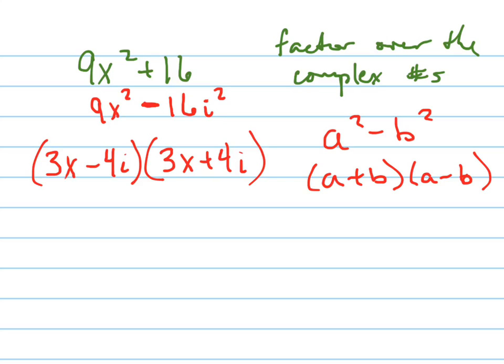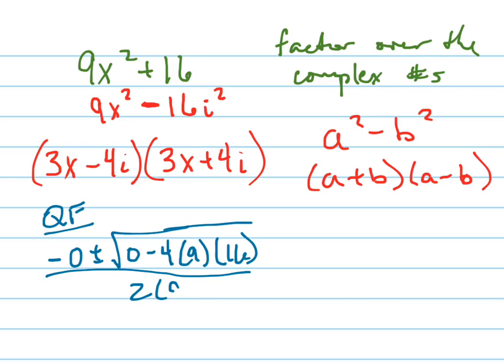I'll do that in blue just to show you it's the same answer. The quadratic formula would be negative b, which is 0, plus or minus the square root of b squared, which is 0, minus 4ac all over 2a.